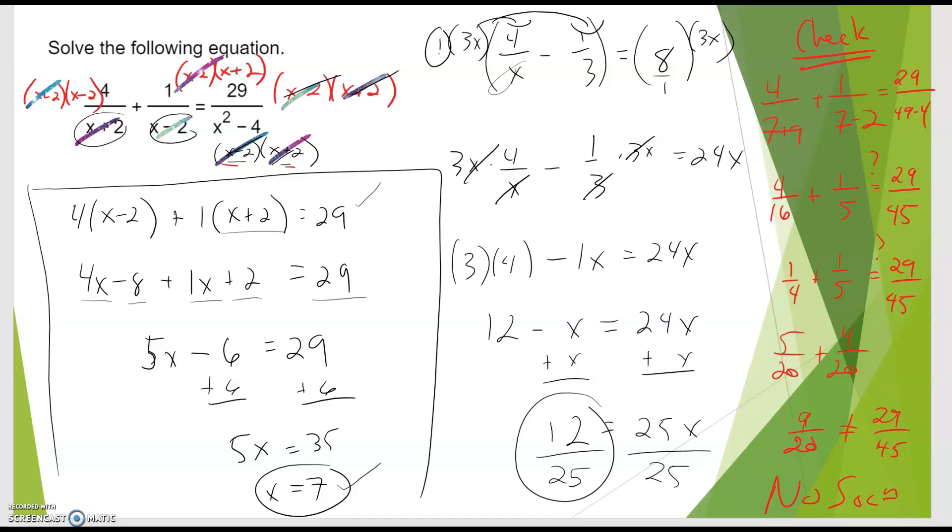So 7 is my answer. Now that I do the check right, 4 9ths. That's where I made a mistake right there. You probably noticed that. 4 9ths plus 1 over 5. Does that equal 29 over 49 minus 45? Yes. So let's try that again. So I am right up to here.